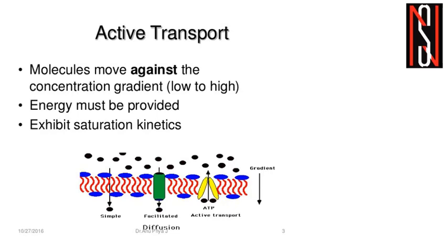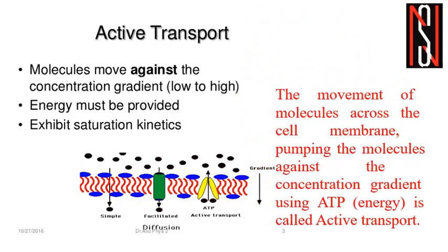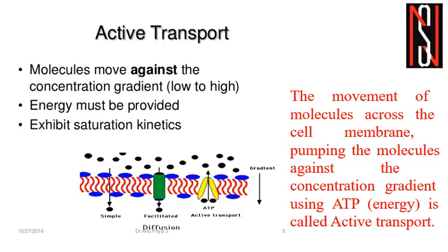The definition of active transport: the movement of molecules across the cell membrane, pumping the molecules against the concentration gradient using ATP energy, is called active transport. This energy is required because we are pushing the molecules from low to high concentration gradient. The energy is in the form of ATP, and the movement of these molecules is from low to high concentration gradient — that is, against the concentration gradient — and ATP pumps the molecules from low to high concentration.